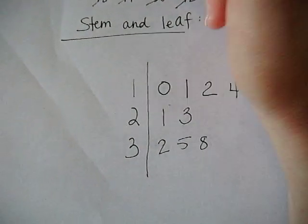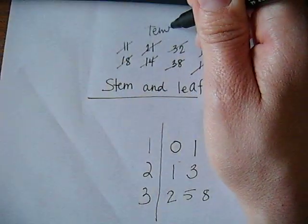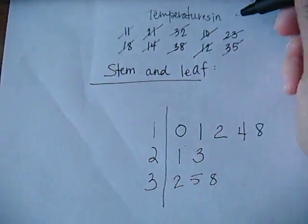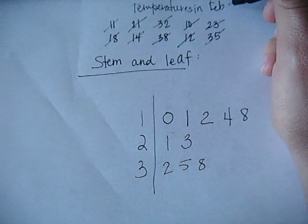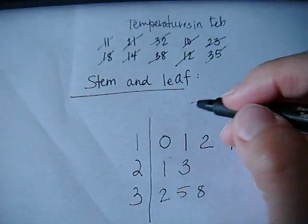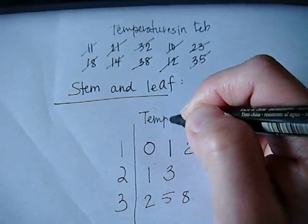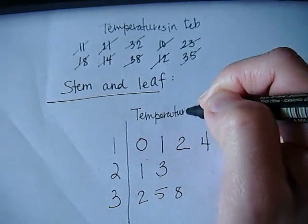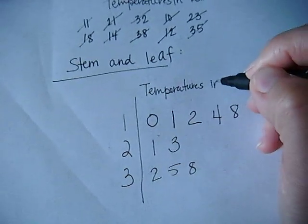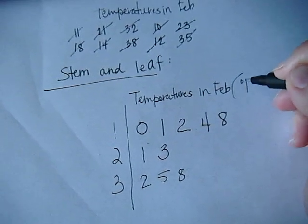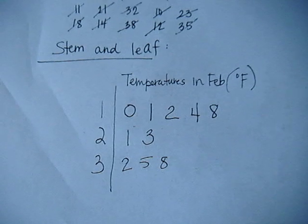So let's just pretend this is temperatures in February. That's pretty accurate. So we would want to come back and put a title on our data. So temperatures in February, and also make sure that we have a unit on there if that's appropriate.